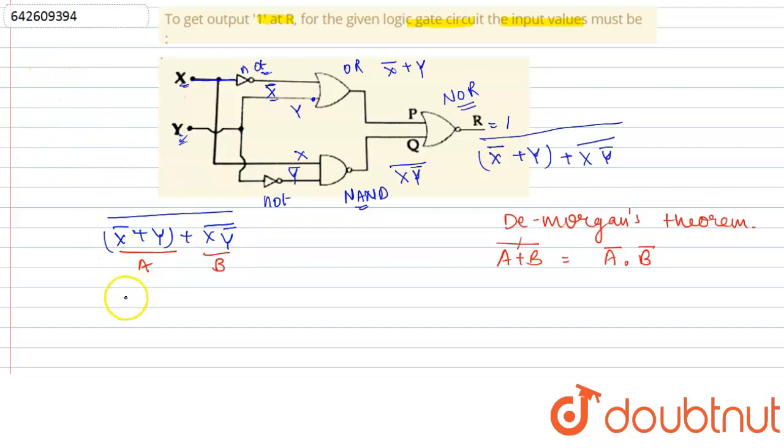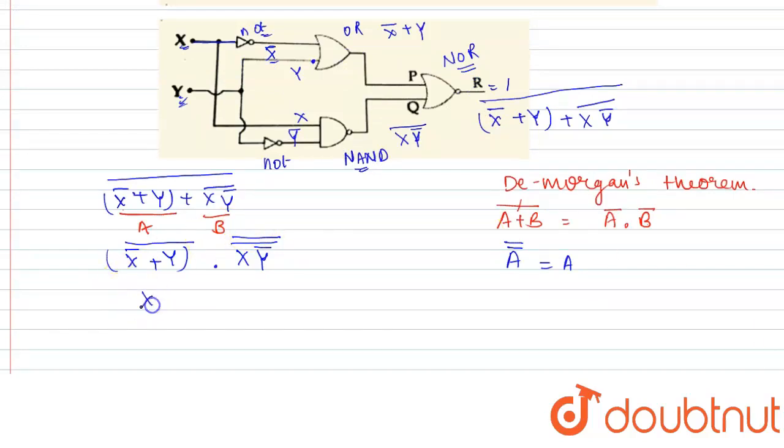So on solving further, we will get (x̄ + y) whole bar · x·ȳ whole bar again, whole bar. And you should know that the bar of bar is equals to the same input. So this can be considered as the same input.